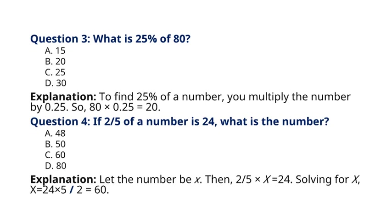Question 4. If 2 by 5 of a number is 24, what is the number? A. 48, B. 50, C. 60, D. 80. Explanation: Let the number be X. Then, 2 divided by 5 multiplied by X is equal to 24. Solving for X, X is equal to 24 into 5 whole divided by 2, which is equal to 60. So the correct answer to question 4 is option C. 60.